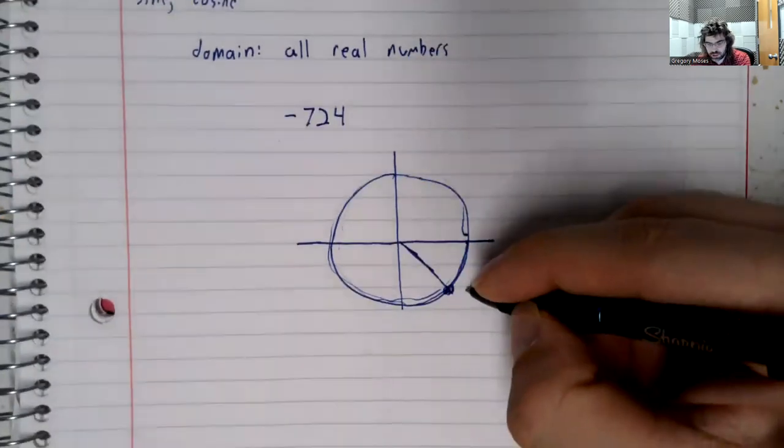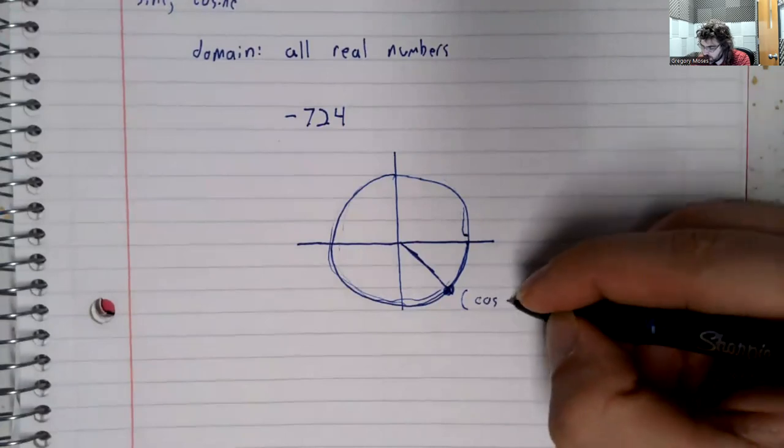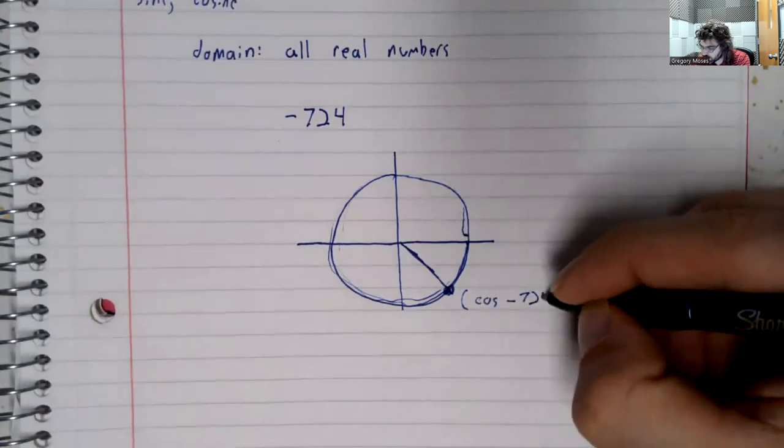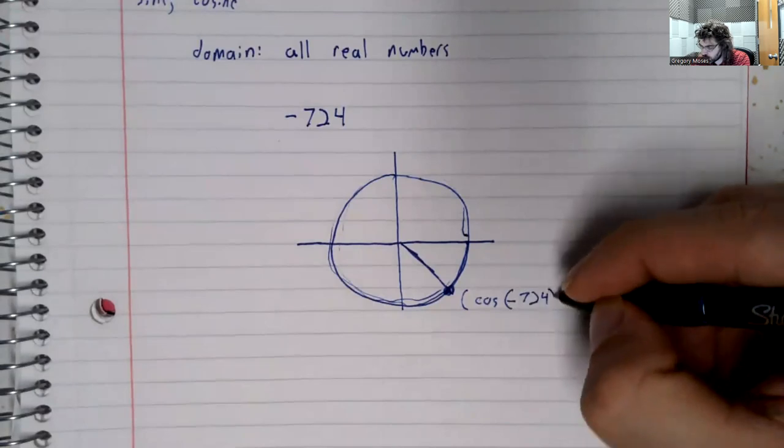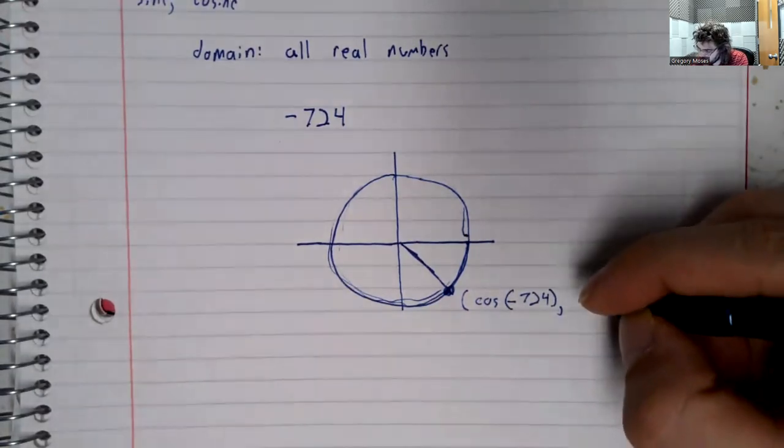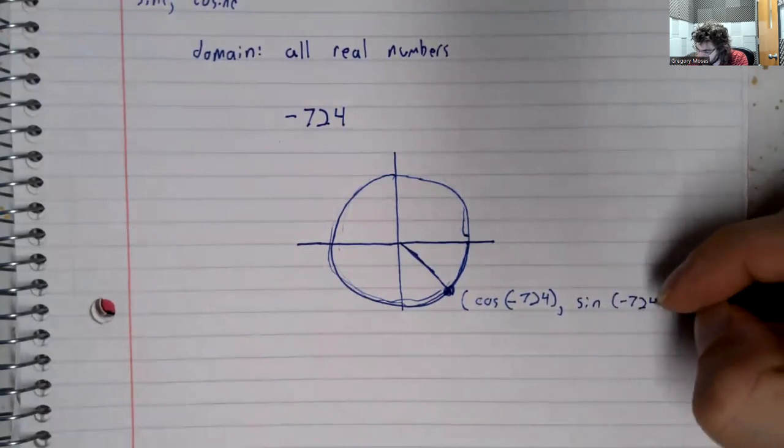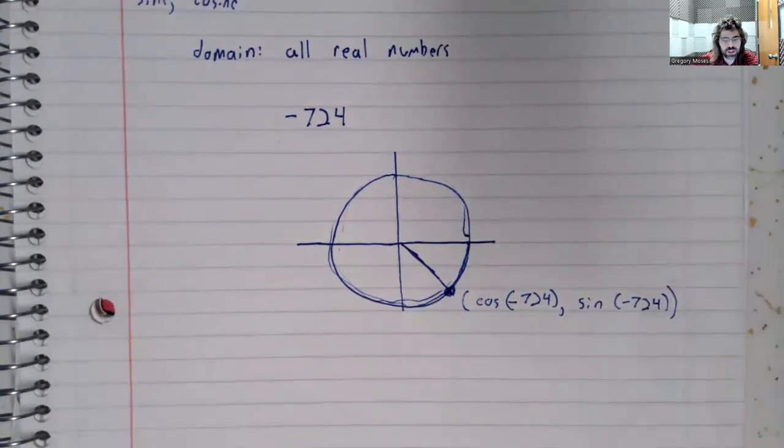And the x-coordinate, the cosine of negative 724. And the y-coordinate of this point is the sine of negative 724.